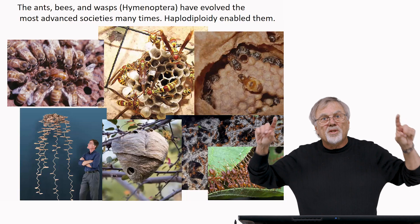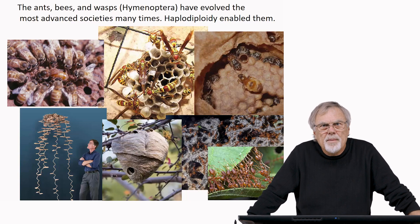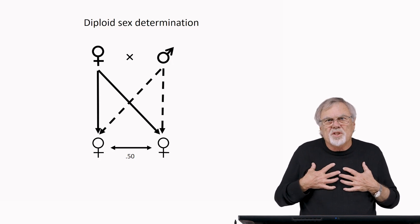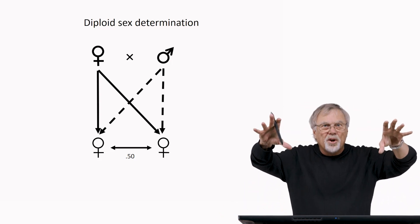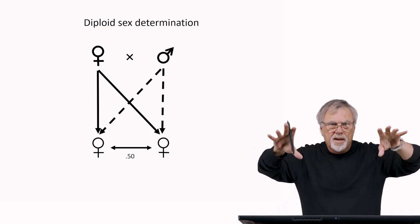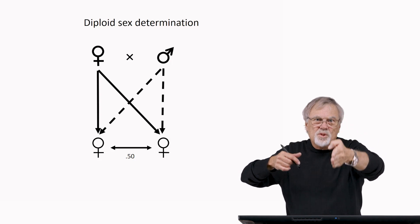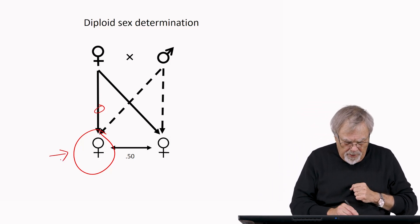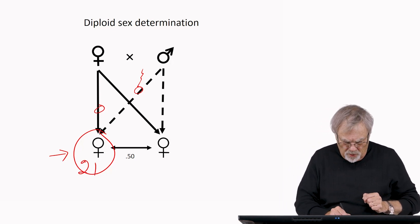The ants, bees, and wasps, known as the Hymenoptera, have evolved the most advanced societies many times. This sex determination system we call haplodiploidy enabled them to evolve this level of sociality. What we're most familiar with is the diploid sex determination system that we have. We inherit one set of chromosomes in an egg — our mother has meiosis when her eggs are being made, and each egg gets one set of chromosomes. That set passes into the next generation through the egg. But also associated with the individual is a set of chromosomes from their father via sperm. The sperm and egg combine, forming an individual with two sets of chromosomes.